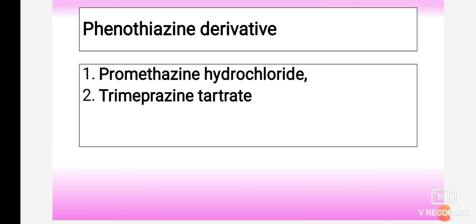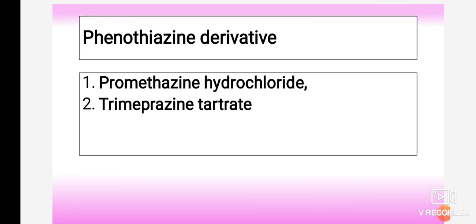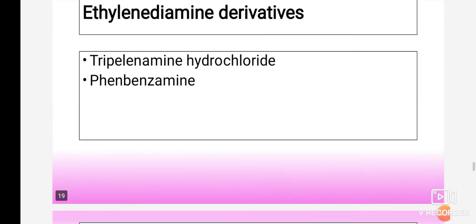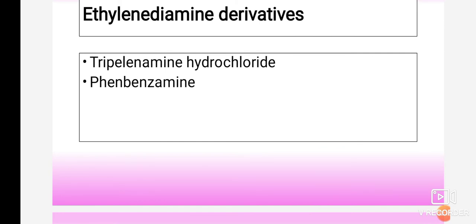Under phenothiazine derivatives, the two main drugs are trimeprazine and promethazine — both contain the phenothiazine nucleus in their structure. Based on the presence of the main nucleus, there are different chemical classes under antihistaminic agents. Under ethylenediamine derivatives, the drugs are phenbenzamine and tripelennamine hydrochloride. Tripelennamine hydrochloride is the hydrochloride salt form of tripelennamine.